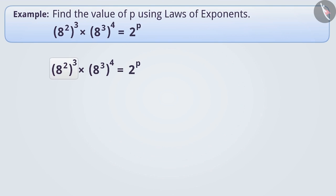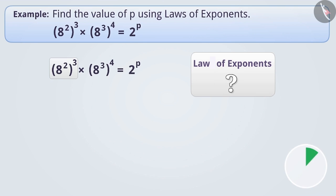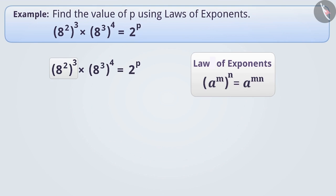If we have to simplify 8 square to the power of 3, we will use the law: a to the power of m to the power of n, which is equal to a to the power of mn, where a is an integer and both m and n are whole numbers.